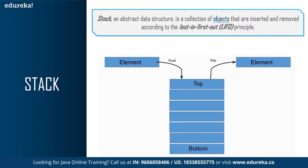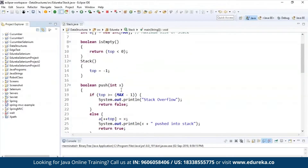A stack is an ordered list where insertion and deletion can be performed only at one end — the top. It is a recursive data structure with a pointer to its top element. It supports two fundamental methods: push, which inserts an element to the top of the stack, and pop, which removes and returns the top element. Examples include reversing a word, checking correctness of a parenthesis sequence, and implementing back functionality in browsers.